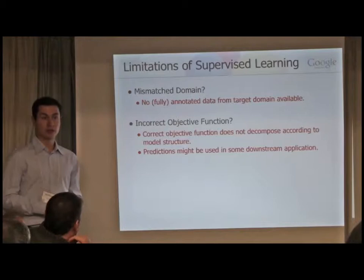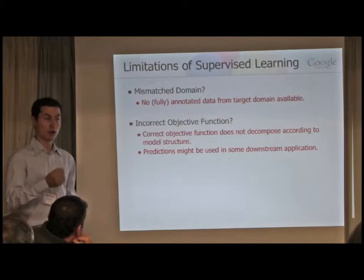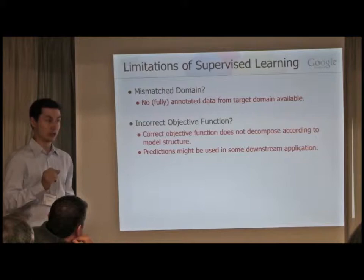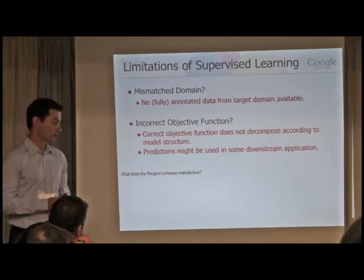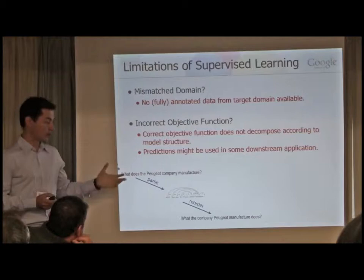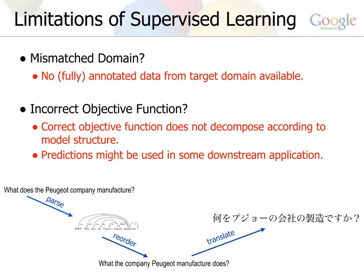The other problem with supervised learning is that the objective function we optimize is often not exactly what we care about. This may be because the objective doesn't decompose according to model structure, or because we're using a model in a pipeline where we care about downstream application-specific performance. In our work with a machine translation team, they parse sentences and change word order before translating — a simple way to incorporate syntax into MT. It doesn't really matter exactly what the parse tree was, as long as we get the right reordering. So we'd like to feed back information from the translation or reordering into the parser.